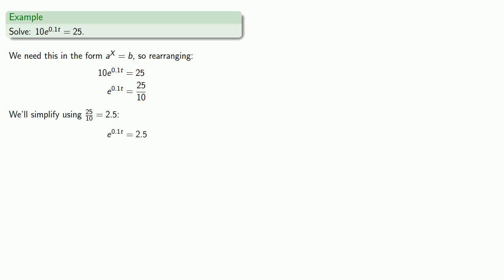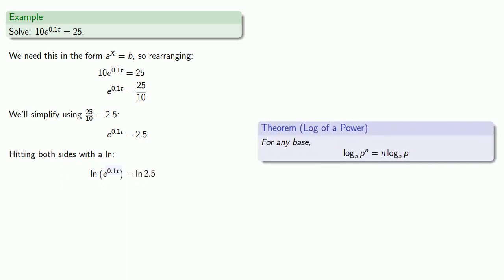We'll hit both sides with a log. We can apply the power rule. For example, this exponent 0.1t can come out front.